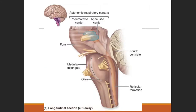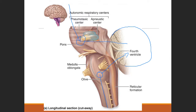The cerebellum resides just posterior to the brain stem. Proprioceptive information ascends the cord, synapses in the inferior olivary nucleus, and is relayed to the cerebellum. Voluntary motor function from higher brain centers synapses in the pontine nucleus and is also relayed to the cerebellum.